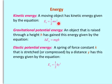Kinetic energy is given by the formula Ek = 1/2 mv². Gravitational potential energy: when an object is raised through height h, it has gained this potential energy given by the formula ΔEp = mgh.